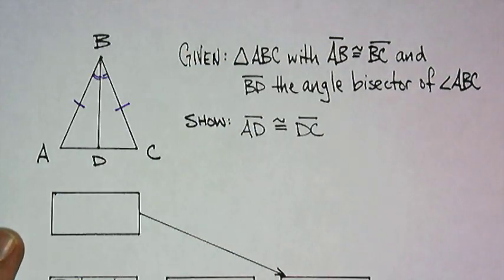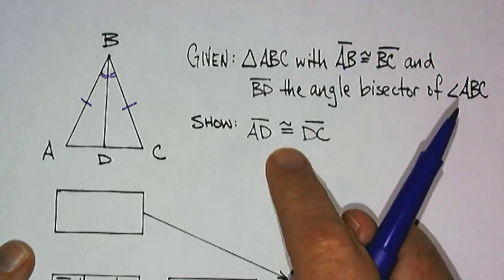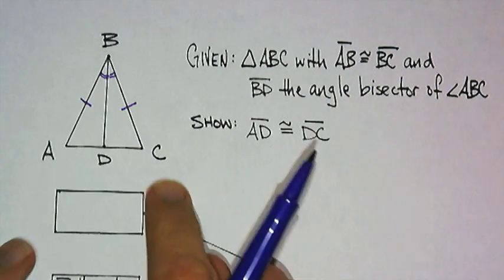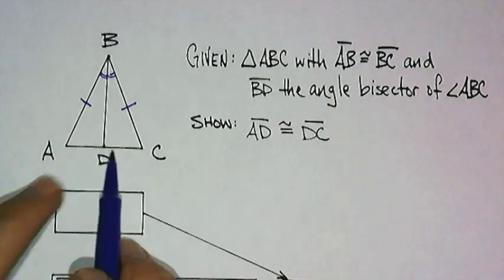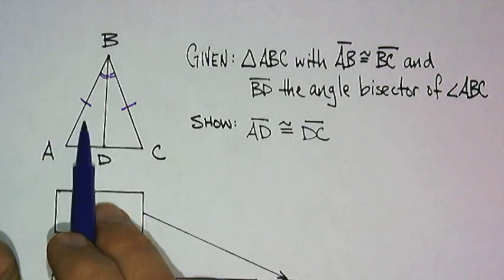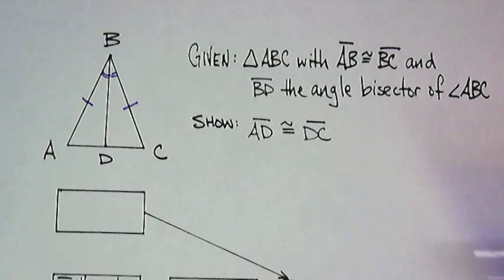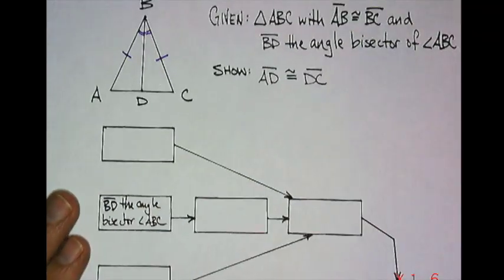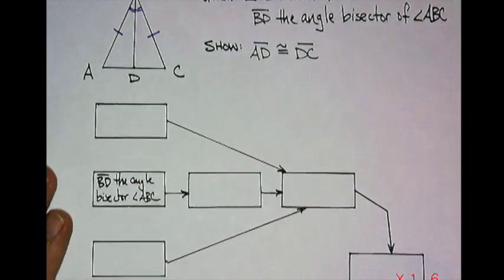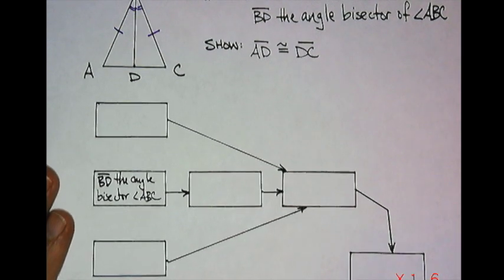If I'm going to prove that AD is congruent to DC, it seems I've got to plan it out. If I prove that these two halves were congruent, then I would have it. I've already made the flowchart out for us, and we just need to fill in the boxes.